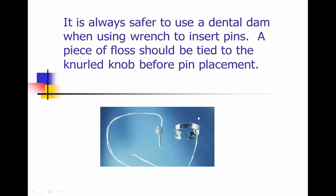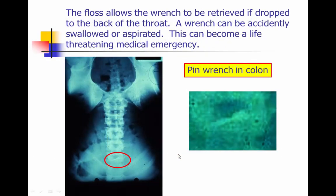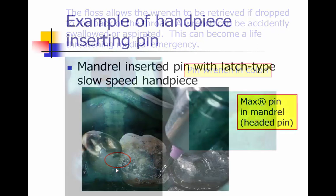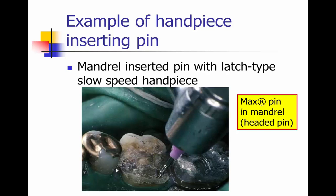It's always safer to use a dental dam when using a wrench to insert pins. A piece of floss should be tied to the knurled knob of a wrench — the same way you'd put floss on a dental clamp. Accidents occur. What you're looking at here is a radiograph of a pin wrench in the colon of a patient. It can be a life-threatening emergency if aspirated. Most drills and pins used in the clinic are placed with a handpiece.